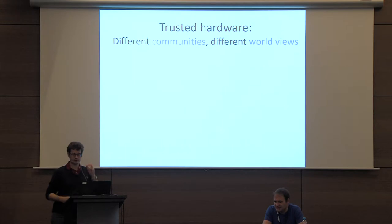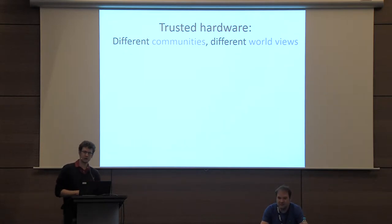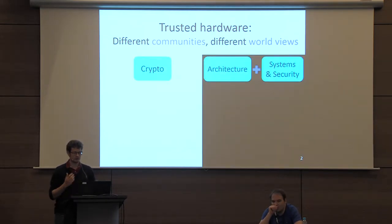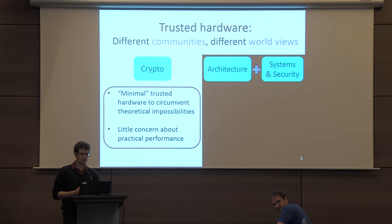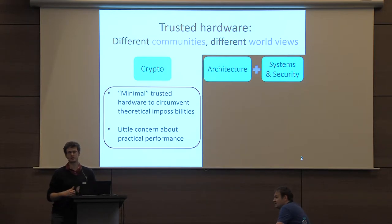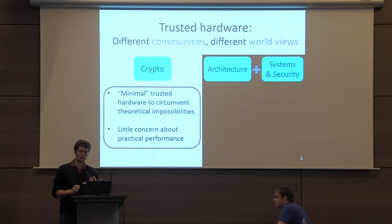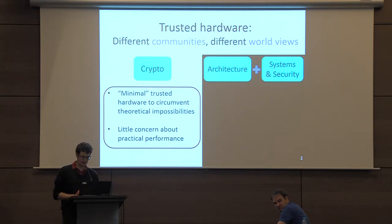Let me start by putting our work in context — why we want these formal abstractions — by looking at the history of how trusted hardware has been viewed in different communities. We can identify two different trends. In our own crypto community, especially in theoretical cryptography, hardware assumptions have usually been used as a minimal set of assumptions that allow us to circumvent some theoretical impossibilities, such as composable security. The goal here was more to get theoretical feasibility from the smallest assumption possible, with little concern about actual practical performance.